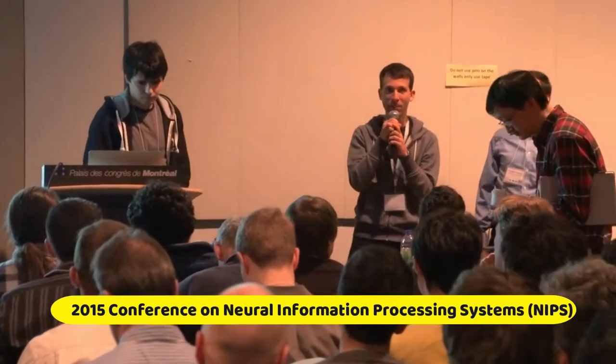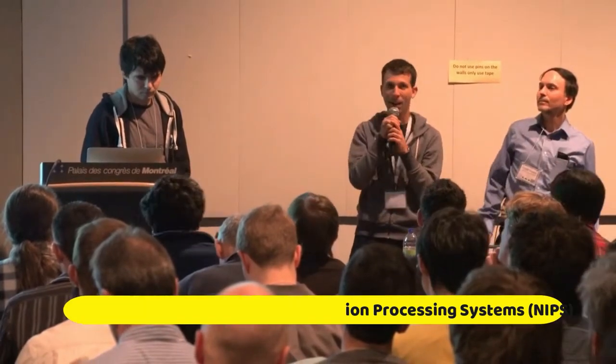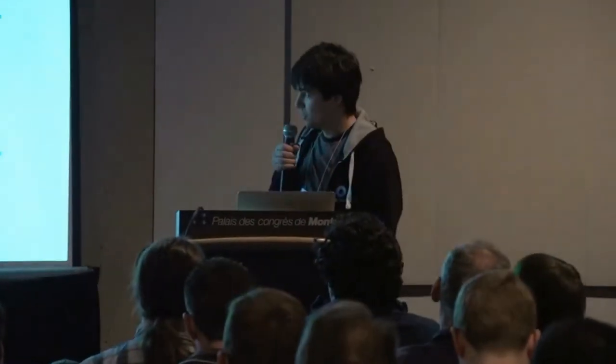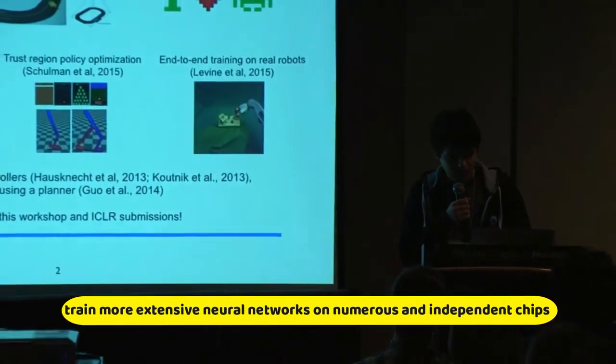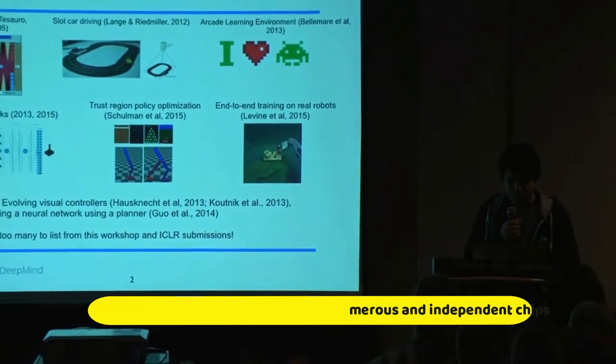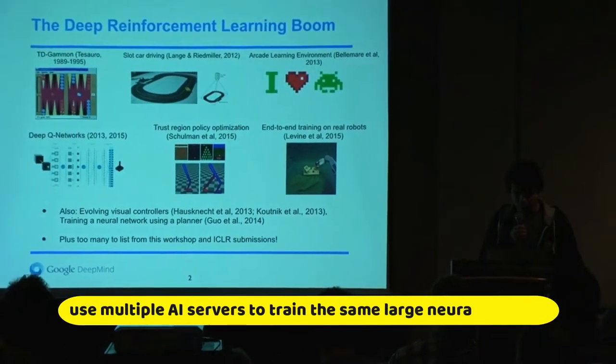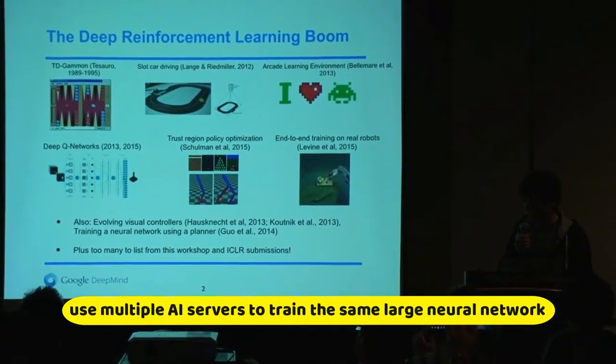At the 2015 Conference of Neural Information Processing Systems, or NIPS, researchers proposed solutions to the training problem. The first was to train multiple smaller neural networks called deep supervision. The second was to train more extensive neural networks on numerous independent chips. The final proposal was to use AI servers to train the same large neural network.